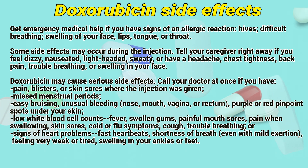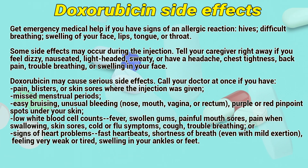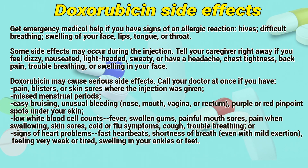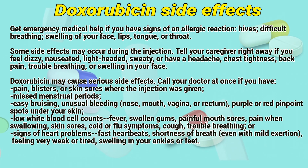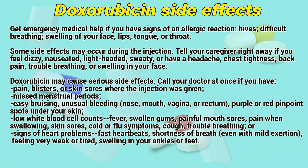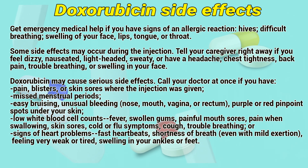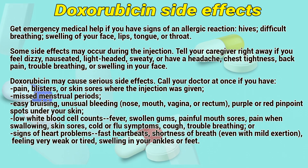Doxorubicin may cause serious side effects. Call your doctor at once if you have pain, blisters, or skin sores where the injection was given; missed menstrual periods; unusual bleeding from the nose, mouth, vagina, or rectum; purple or red pinpoint spots under your skin; or low white blood cell counts with fever, swollen gums, painful mouth sores, pain when swallowing, skin sores, sore throat, flu symptoms, cough, or trouble breathing.